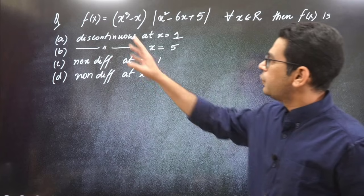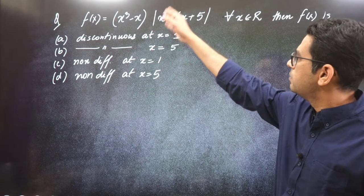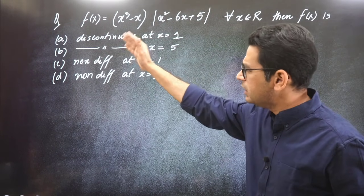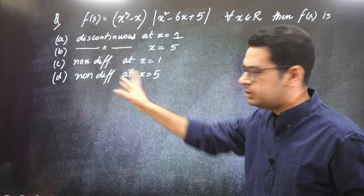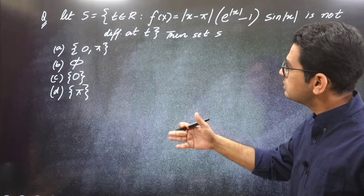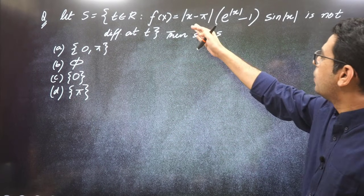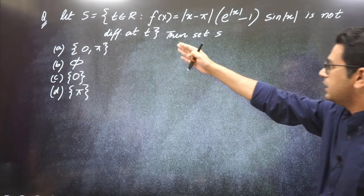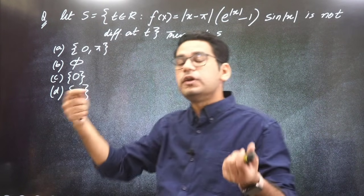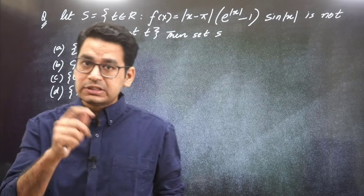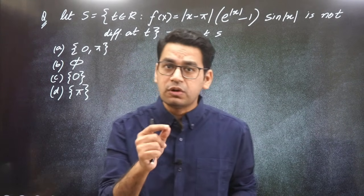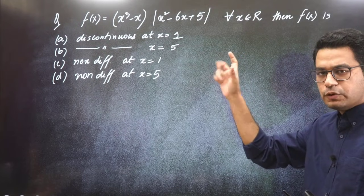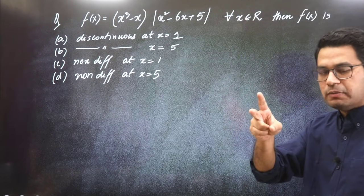For example, f(x) is x³ minus x modulus, this function for all x belonging to R. Then f(x) is discontinuous at x equals 1, 5, non-differentiable, etc. Similarly you can take this kind of question where f(x) equals mod of this and differentiable at that point. Then you have to find the point of differentiability. Both questions look tough. Let's see how to solve this.